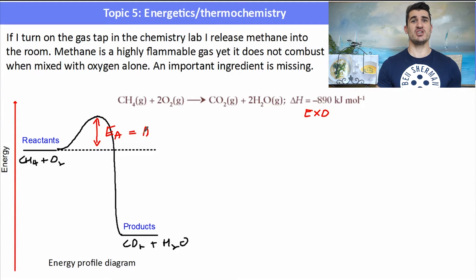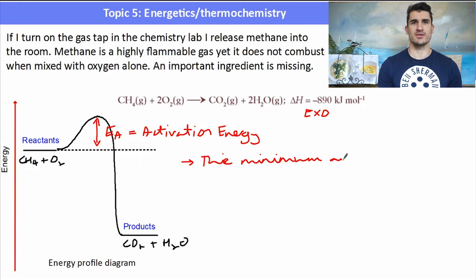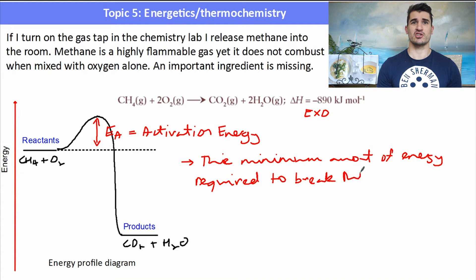Now the activation energy is how much energy we need to provide to get the reaction to begin. Remember I said at the start of this video that the breaking of bonds in reactants is endothermic. So endothermic means we have to add in some energy to break the bonds in the reactants to get them to form products. Now the activation energy describes the minimum amount of energy required to break the bonds in the reactants to then form products. It's like the minimum energy required to start the reaction occurring. Once it starts occurring, it releases the energy and forms the products.